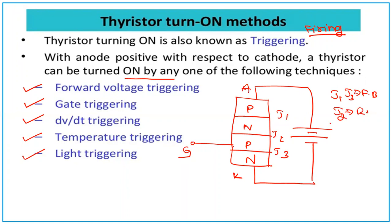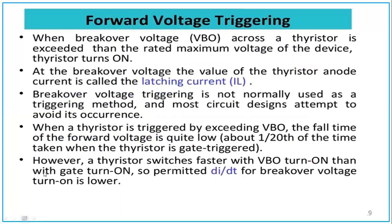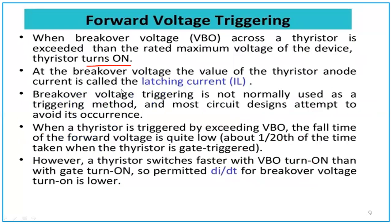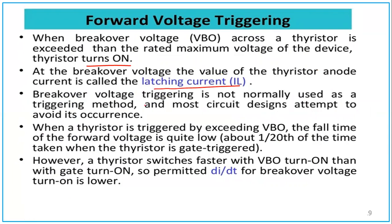For forward voltage triggering: when the breakover voltage VBO across a thyristor is exceeded — that is, beyond the rated maximum voltage — the thyristor is turned on. J2 has a depletion layer because it is reverse biased, and the width of this depletion layer decreases with increase in anode-to-cathode voltage. This method is not normally used in circuits, and circuit designers attempt to avoid its occurrence.